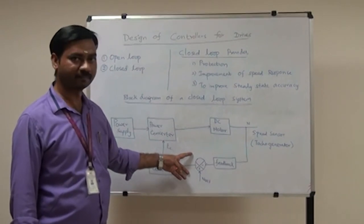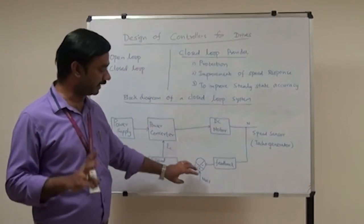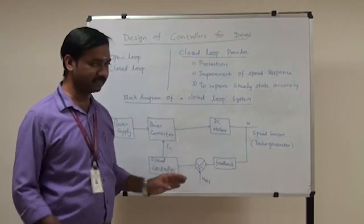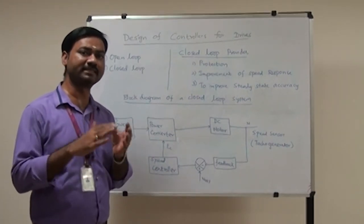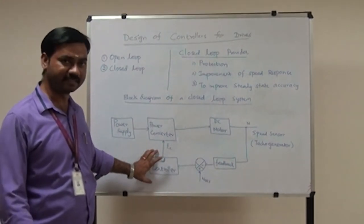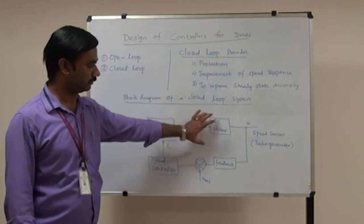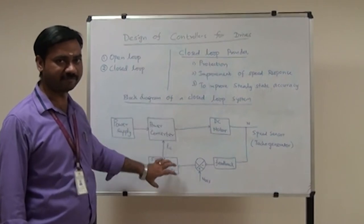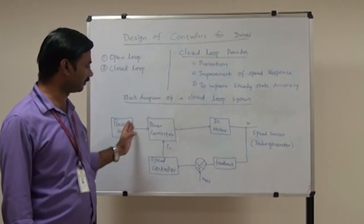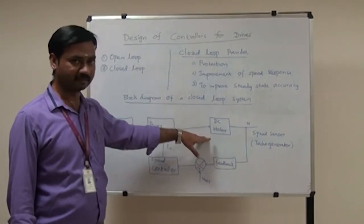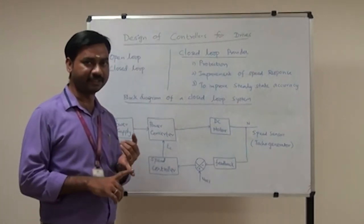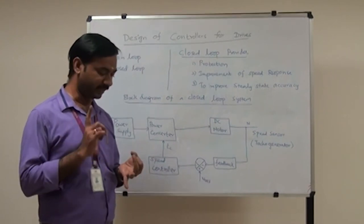The comparator compares two signals: the reference speed and the output (feedback) speed. It produces an error signal if there is a difference between the reference and the output signal. The comparator output goes to the speed controller, which, as the name suggests, controls the speed of the motor. The control signal from the speed controller is given to the power converter. The power converter is used because the motor requires a specific type of power supply — it converts AC to DC, DC to AC, AC to AC, or DC to DC.